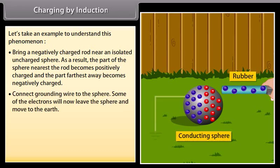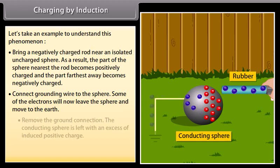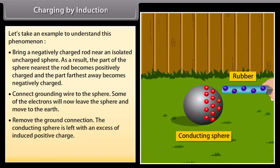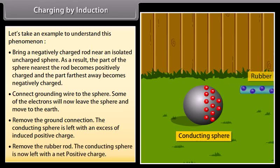Connect a grounding wire to the sphere — some of the electrons will now leave the sphere and move to the earth. Remove the ground connection; the conducting sphere is left with an excess of induced positive charge. Remove the rubber rod; the conducting sphere is now left with a net positive charge.